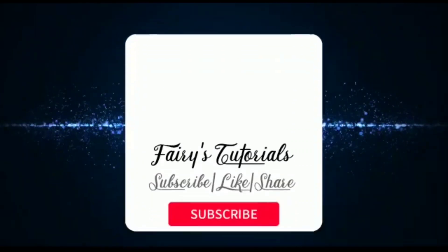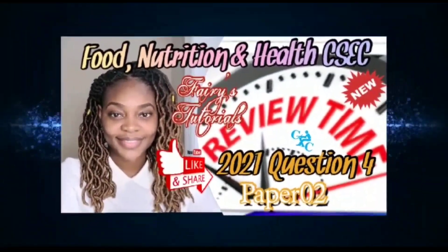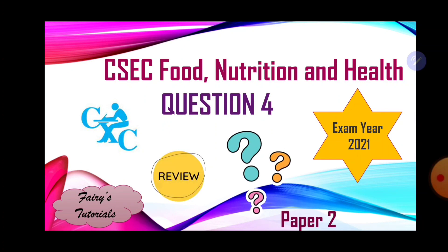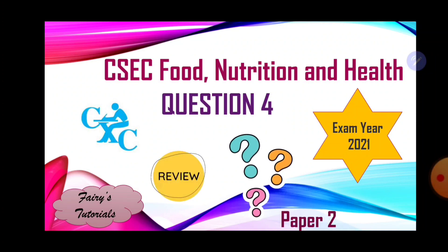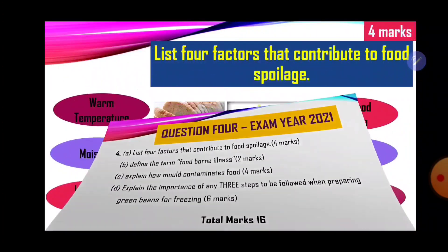Hi guys, welcome back to Ferris Tutorials. CSEC Food Nutrition and Health. In today's episode we're looking at a past paper question for exam year 2021, and we're looking at question four. It reads: list four factors that contribute to food spoilage — four marks; define the term foodborne illness — two marks; explain how mold contaminates food — four marks; explain the importance of any three steps to be followed when preparing green beans for freezing — six marks.